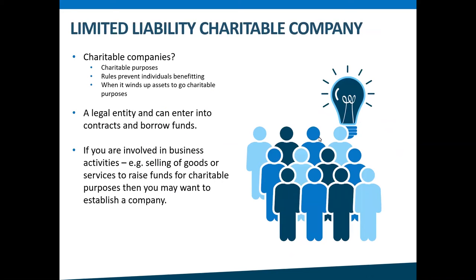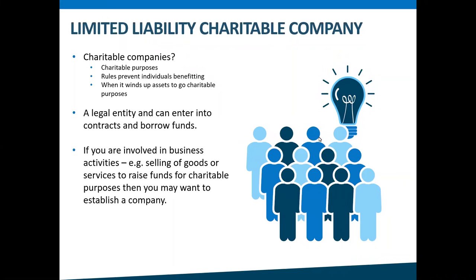The last structure we'll discuss today is a limited liability company, or a company for short. A company can apply to be a charity if it has exclusively charitable purposes — relieving poverty, advancing education or religion, or other purposes beneficial to the community. The company's rules document also has to have protections that prevent individuals from profiting or benefiting from the company; however, it can pay reasonable salaries and other expenses to advance the charitable purposes. Its rules document needs to state that if the charity winds up, its assets will go to charitable purposes. A company's rules also need to prevent paying dividends to shareholders or restrict shareholders to being registered charities in any transfer of shares.